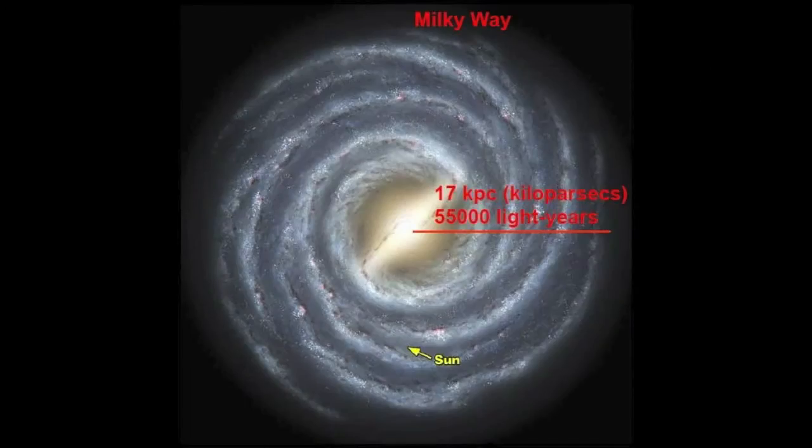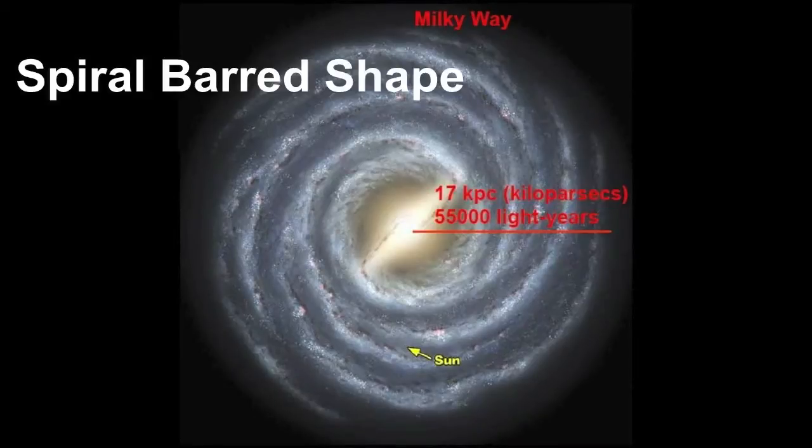In this other picture, we see an artistic representation of the Milky Way, our galaxy. The yellow arrow indicates our own location within the Milky Way. The galaxy has a spiral, barred shape, and it is very symmetric.